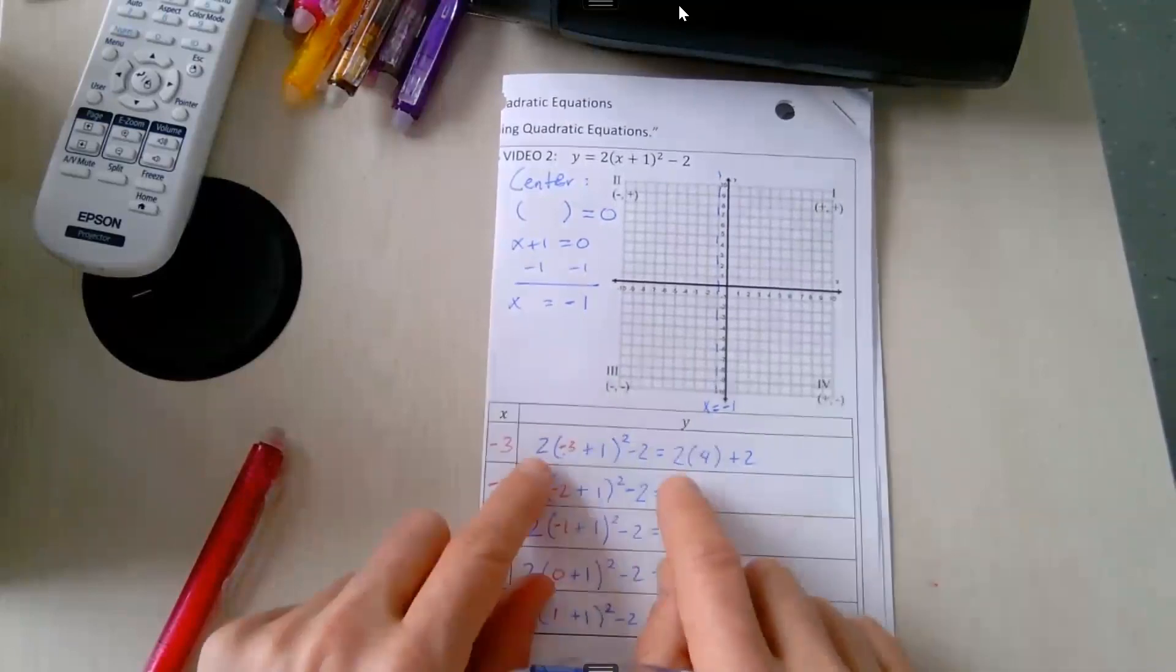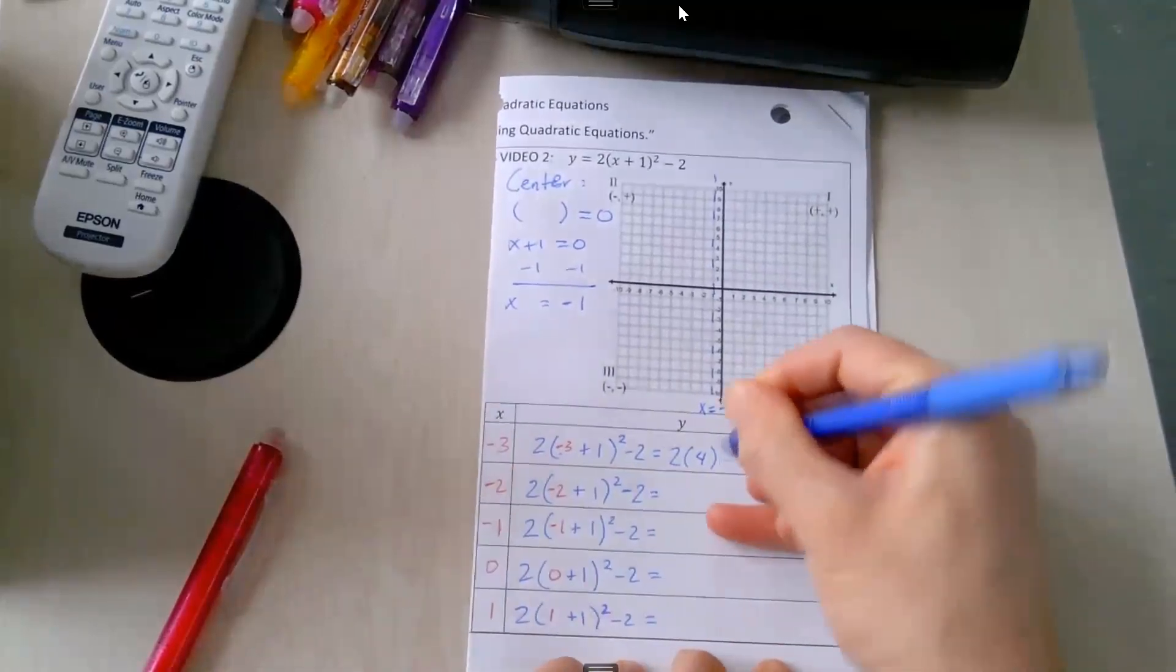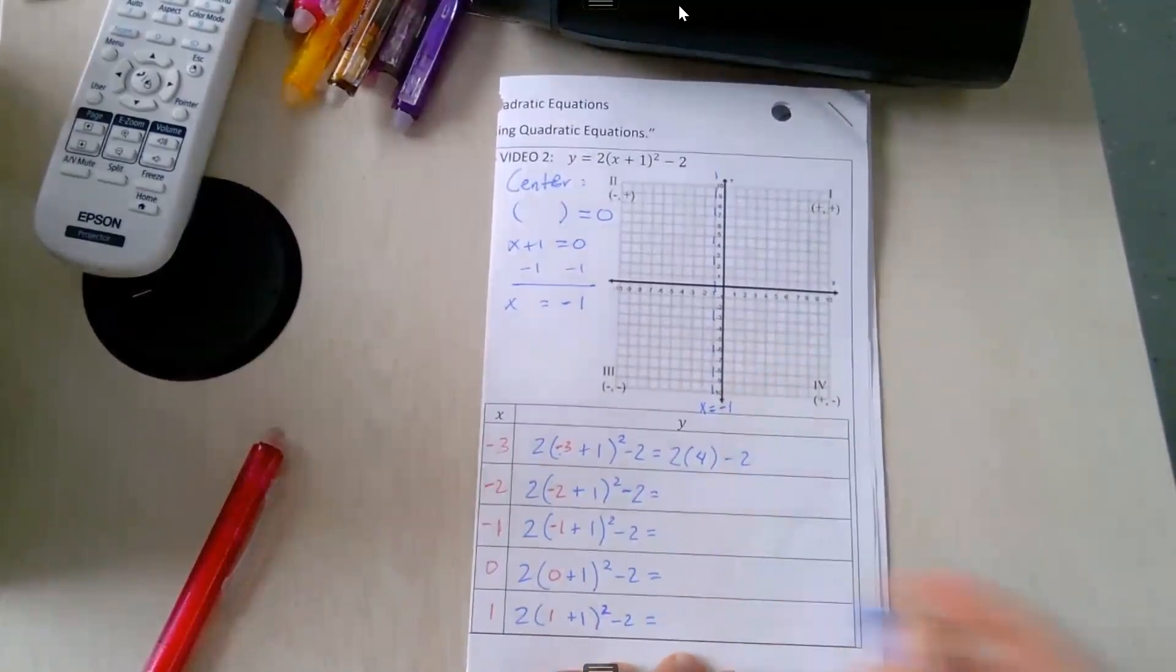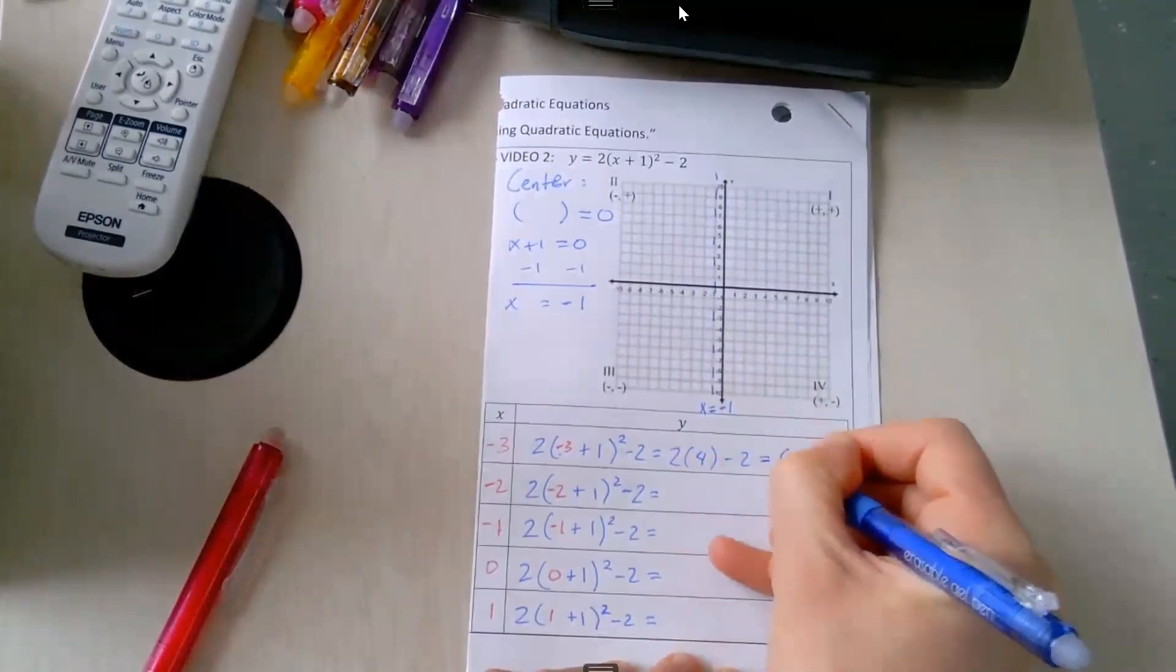Then we still have the 2 on the outside, and then we'll still... Oh, this was wrong. Subtract 2. So now let's finish that up. We have 2 times 4 is 8. 8 minus 2 is 6.